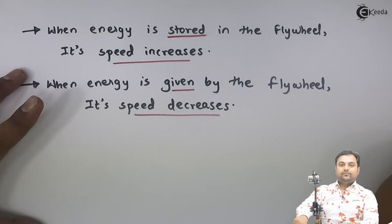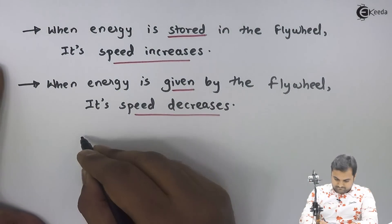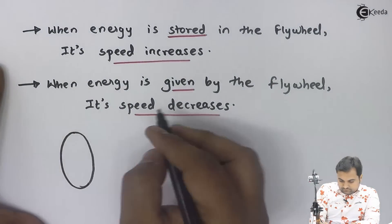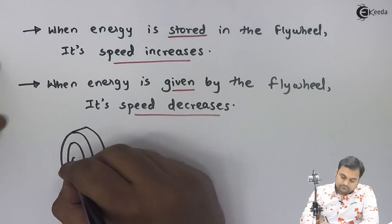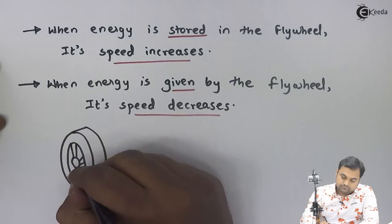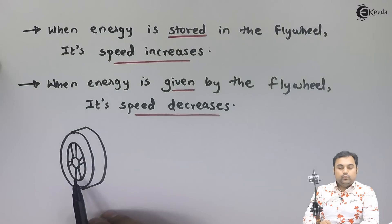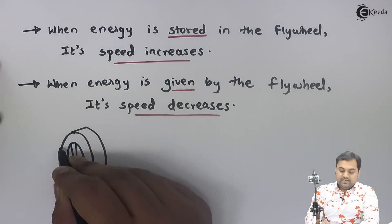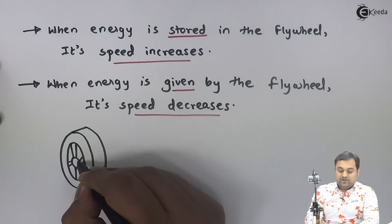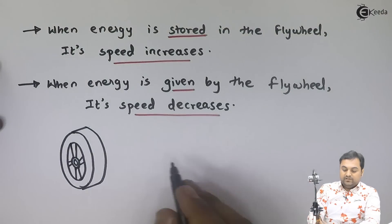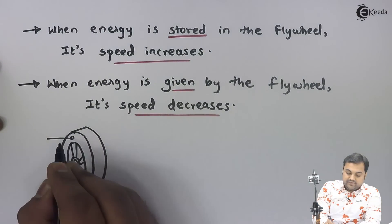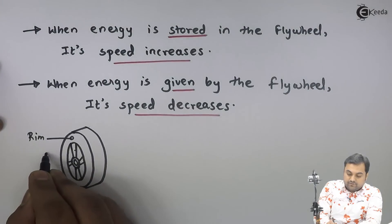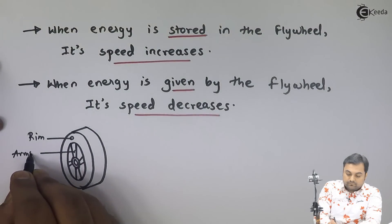Now let me draw the diagram of a flywheel so that we can understand how a flywheel looks. A flywheel is basically circular in section. It has an outer rim, then there are arms, and here we have a hub inside which there is a groove where we can insert the shaft and mount the flywheel.